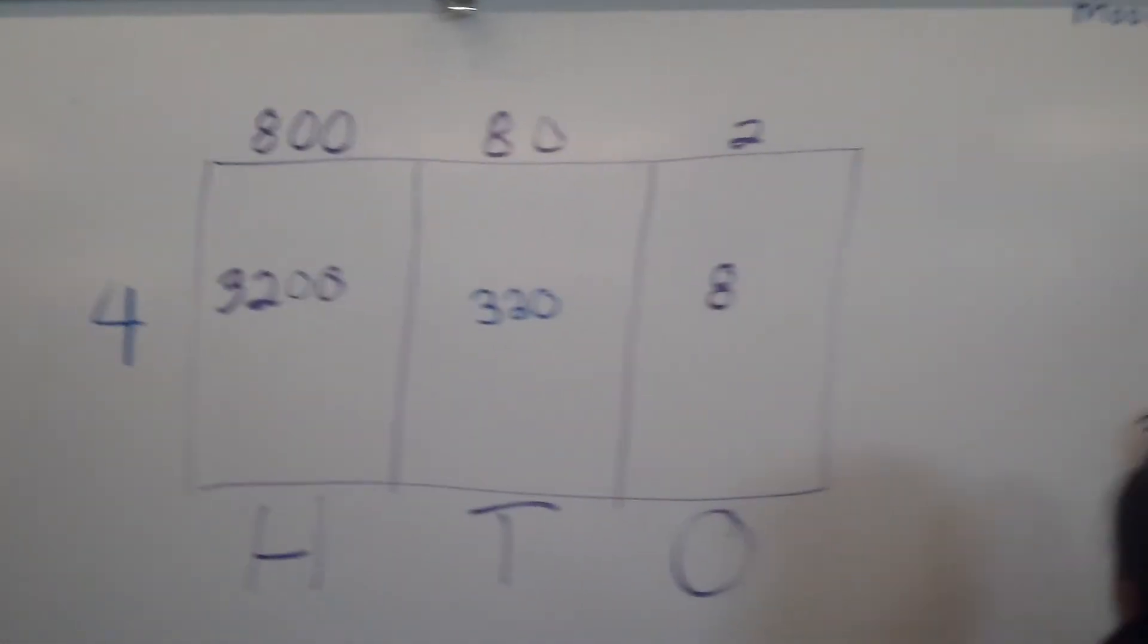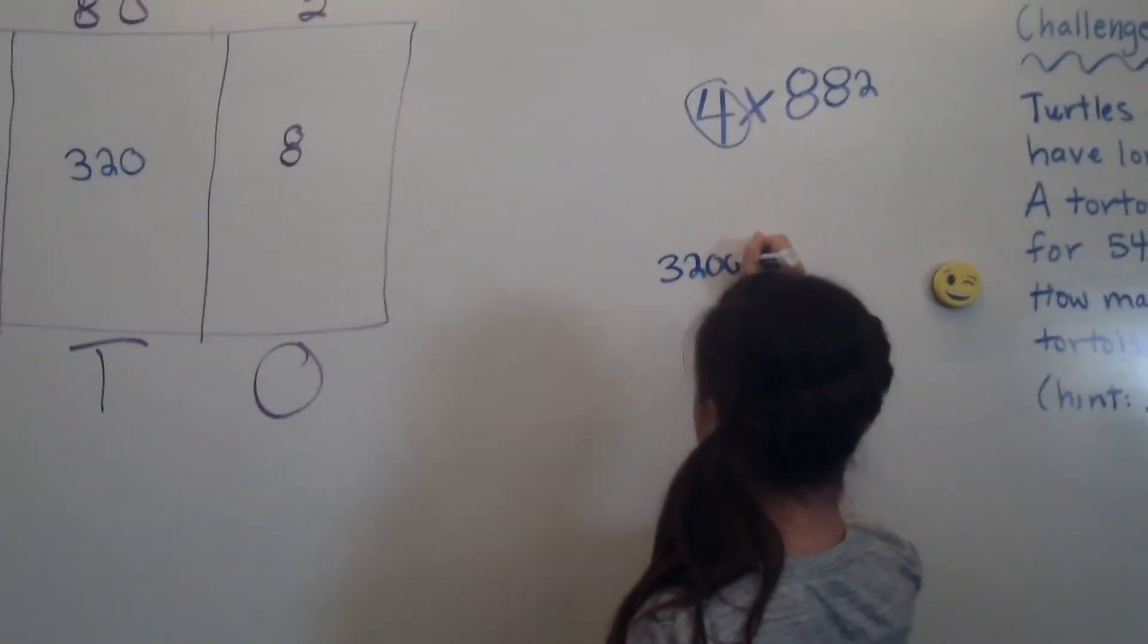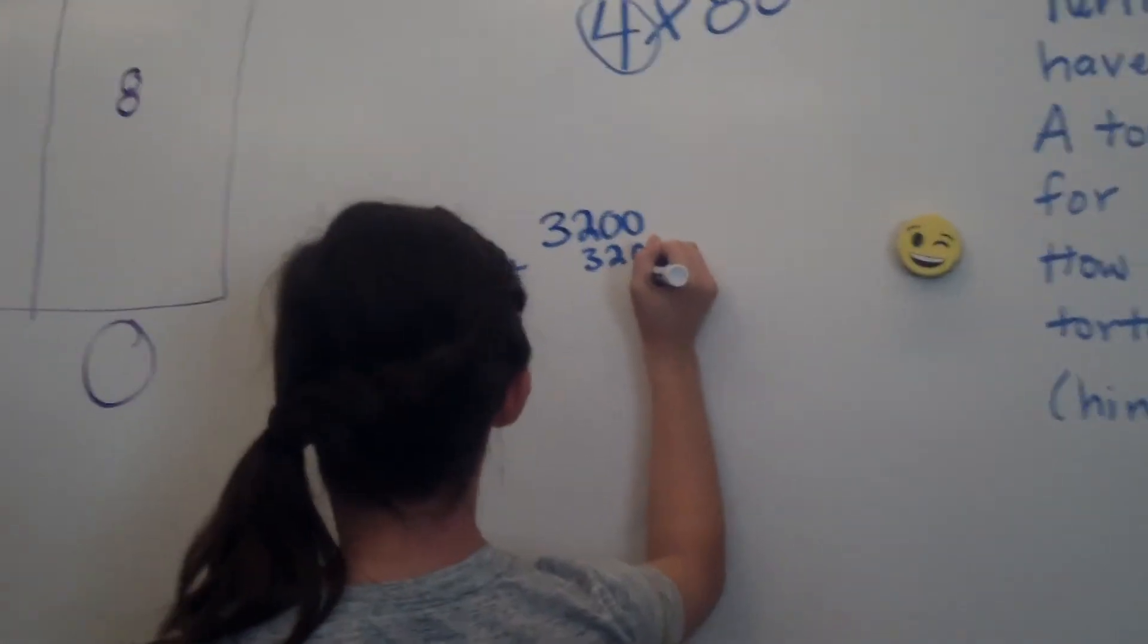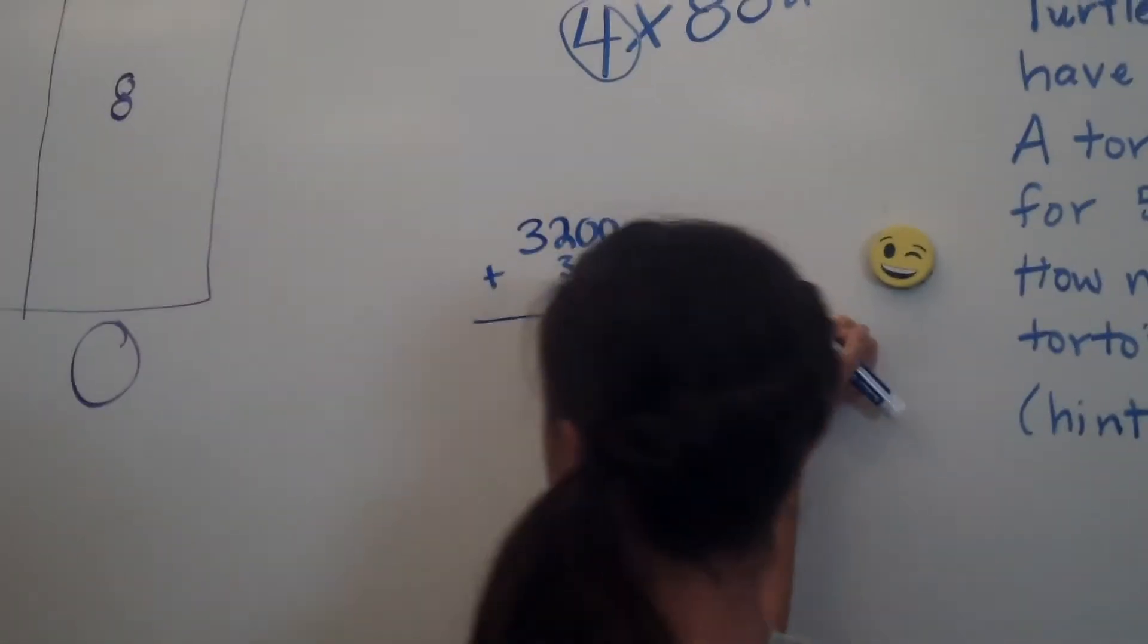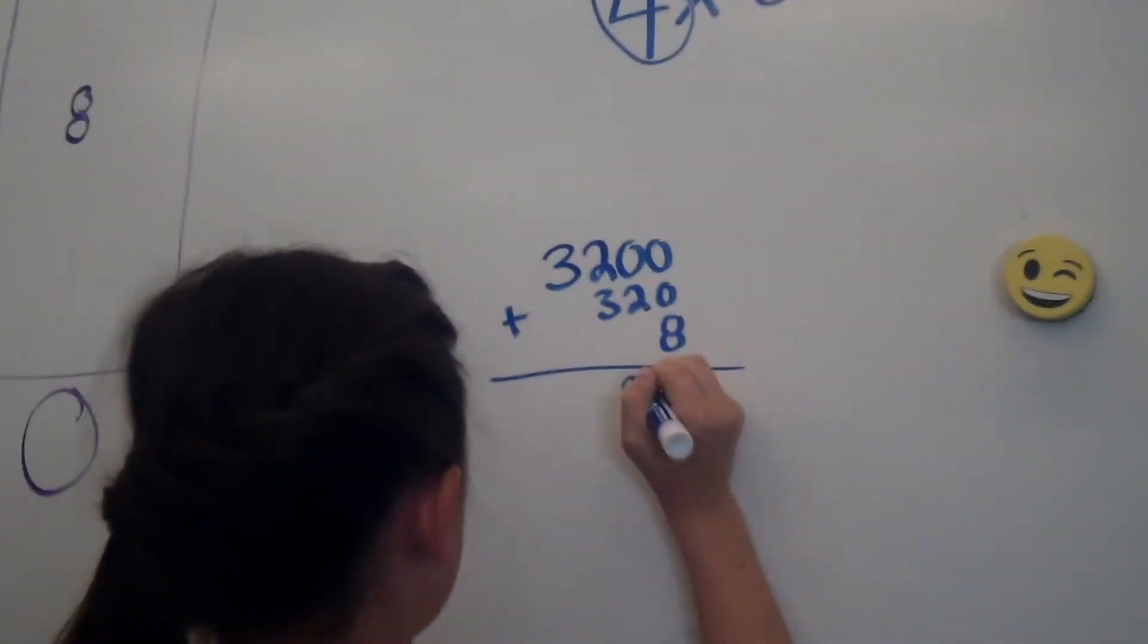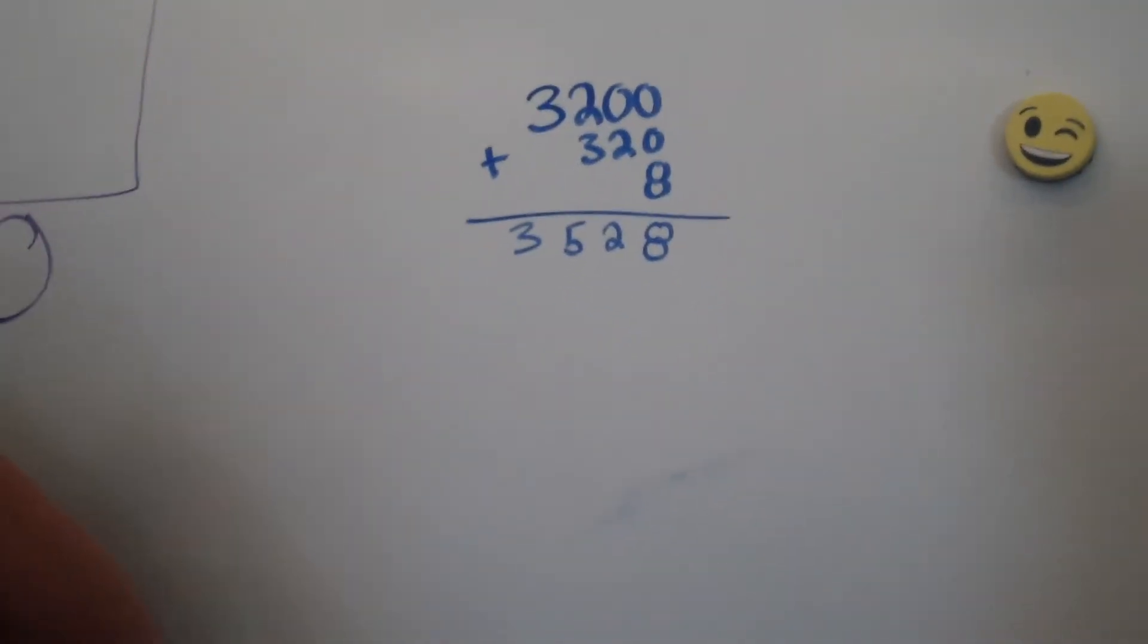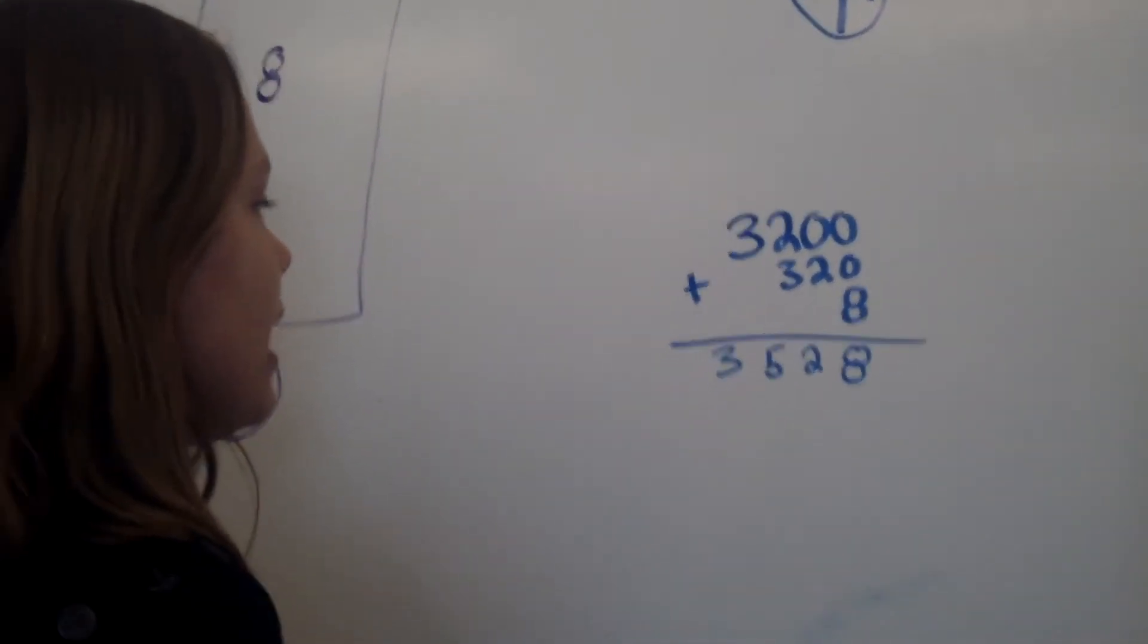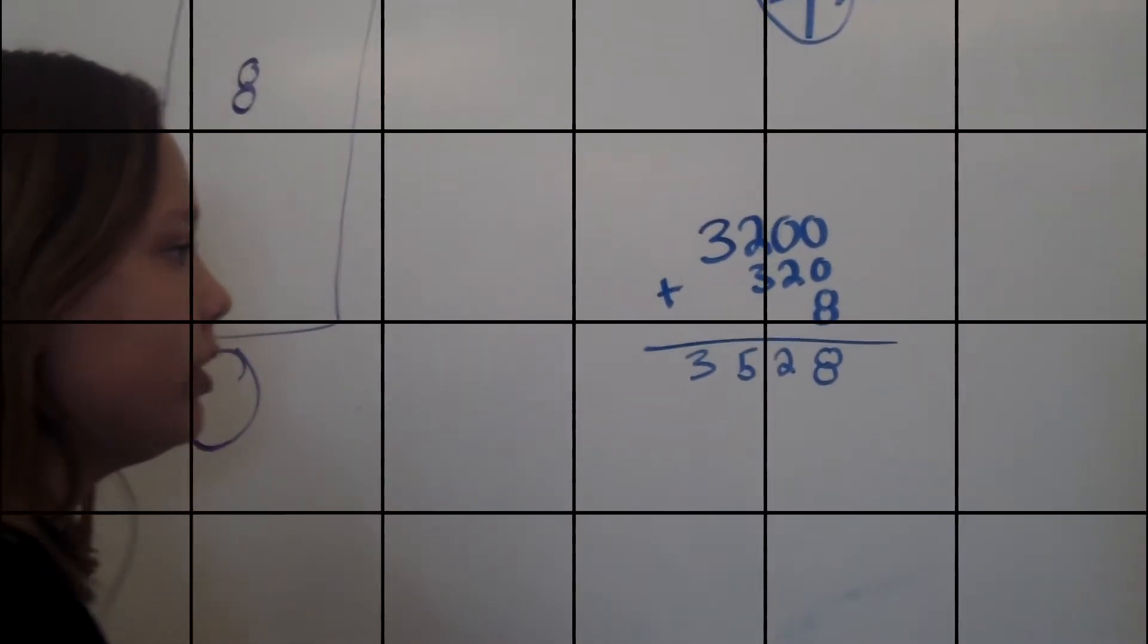And then you're going to take your numbers and you're going to add them all together. 8, 2, 5, 3. So the answer to our problem, 4 times 882, is 3,520.